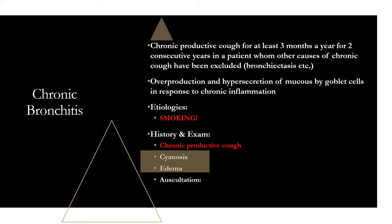On auscultation, this is completely different from emphysema. Emphysema was empty — just full of air. With chronic bronchitis, remember inflammation and mucus. You're going to hear crackles, rhonchi, and wheezing. These bronchioles are inflamed and full of mucus, completely different from the retained air you saw in emphysema.